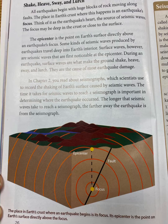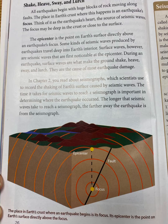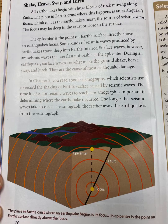All earthquakes begin with huge blocks of rock moving along faults. The place in Earth's crust where this happens is the earthquake's focus — think of it as the earthquake's heart, the source of seismic waves. The focus may be deep in the crust or close to the surface. The epicenter is the point on Earth's surface directly above an earthquake's focus. Surface waves are seismic waves first noticeable at the epicenter. They make the ground shake, heave, sway, and lurch, and are the cause of most earthquake damage.